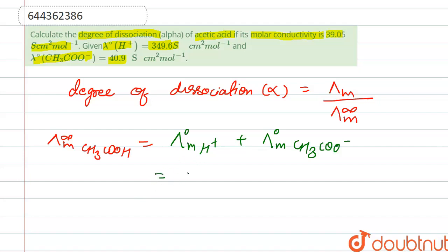H+ is 349.6 plus 40.9, which is equal to 390.5 siemens centimeter square per mole.